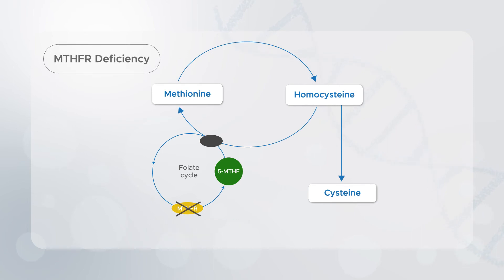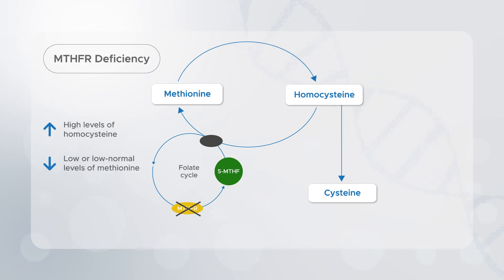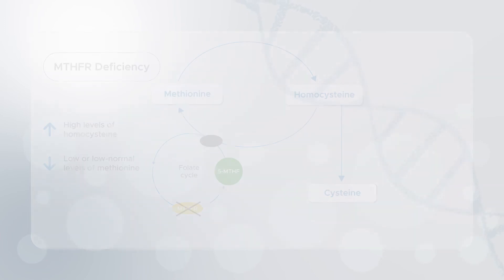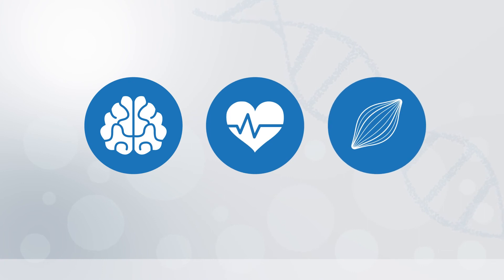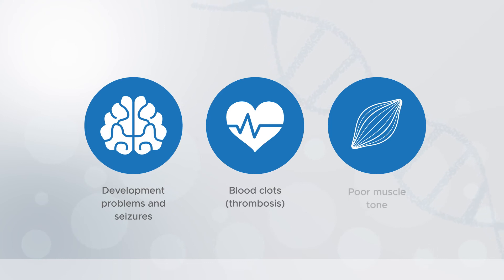When the MTHFR enzyme is not produced or is not working properly, it can lead to high levels of homocysteine in blood and urine, because homocysteine is not being recycled back to methionine, and low or normal levels of methionine in the blood, because no or little methionine is being made. The parts of the body most commonly affected are the brain, central nervous system, and blood vessels. Health problems typically include developmental problems, seizures, blood clots, and poor muscle tone.